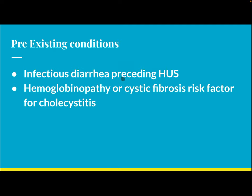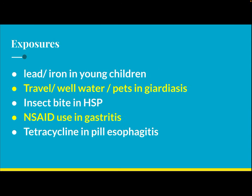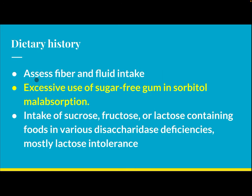Pre-existing conditions: infectious diarrhea can precede hemolytic uremic syndrome; hemoglobinopathy or cystic fibrosis is a risk factor for cholecystitis. Exposures: lead or iron in young children, travel and well water in GI disorders, insect bites in Henoch-Schönlein Purpura, NSAIDs in gastritis, tetracycline and pill esophagitis. Dietary history: assess fiber and fluid intake, excessive sugar-free gum and sorbitol, fructose or lactose — mostly lactose intolerance.